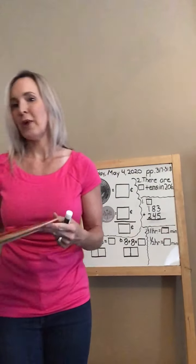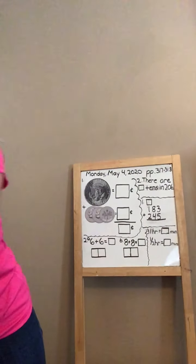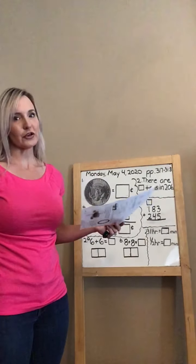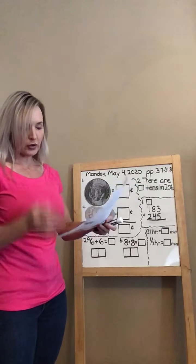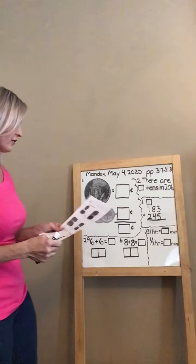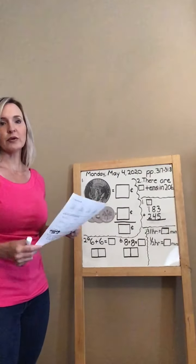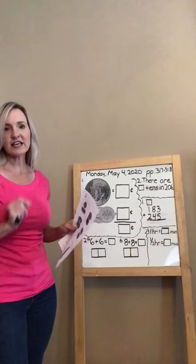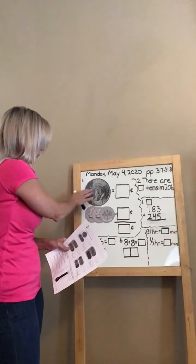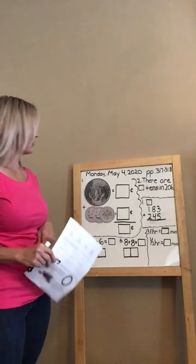Let's get started. We are going to review a couple of problems on your worksheet. We're going to start with page 317 and look at number one — just one problem to help you remember what to do. You're adding coins, so you're going to look at each coin and remember its value.